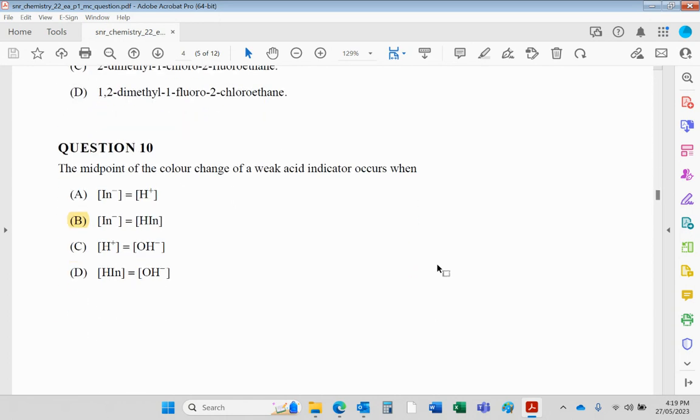Indicators: indicators, as we know, are weak acids where the molecule is one color and the anion is a different color. When they're in equal numbers or equal concentrations, you're going to get a midpoint of that color change, and that means HIn and In− would be the same concentration.